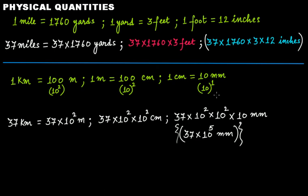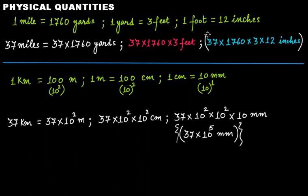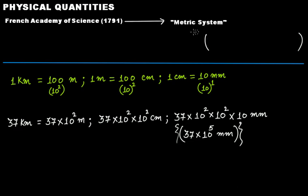The metric calculation is much easier because units are related to each other in terms of multiples of powers of 10: 1 km = 10² m, 1 m = 10² cm, 1 cm = 10¹ mm. That's what we call the metric system. This is why French Academy of Science in 1791 recognized the benefit of this system and named it the metric system.